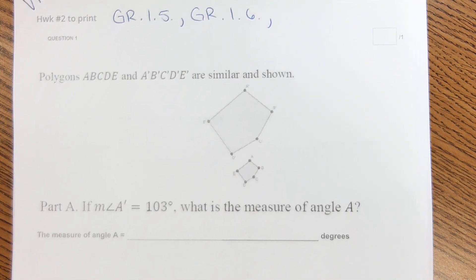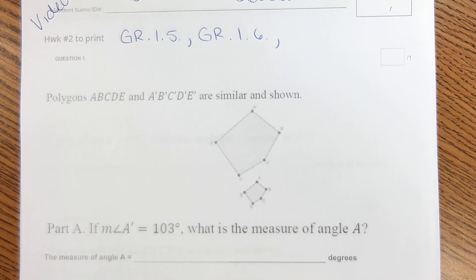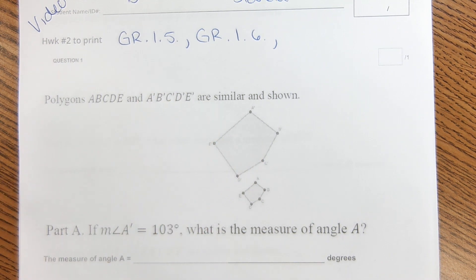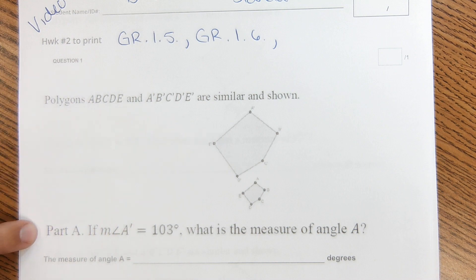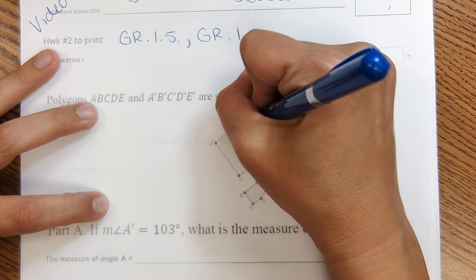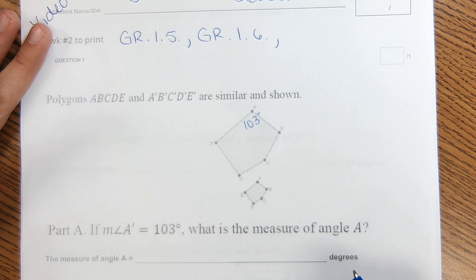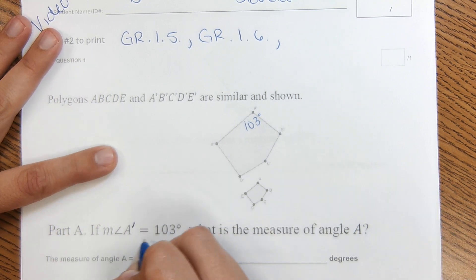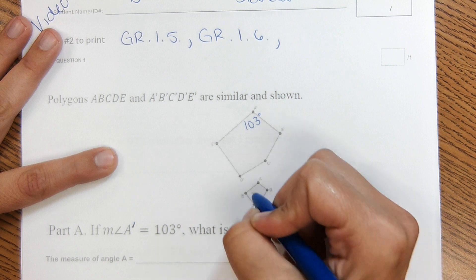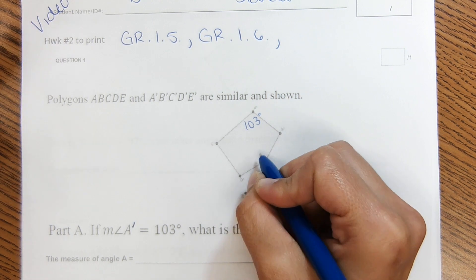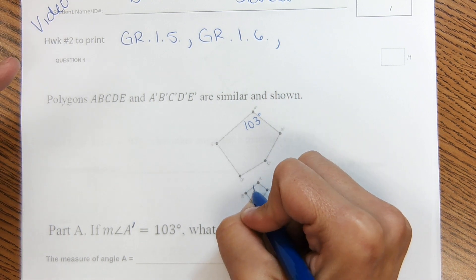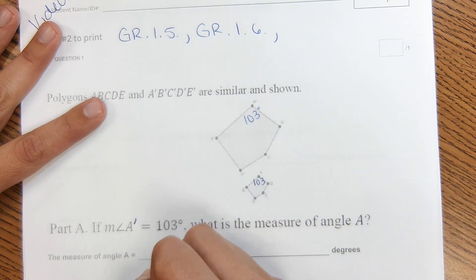So the first one, polygon ABCDE and A'B'C'D'E' are similar and shown, part A. If measure of angle A is 103 degrees, what is the measure of angle A'? Well, if angle A' is 103, what is the measure of angle A? So in similar shapes, the angles are actually the same, so angle A should also be 103 degrees.